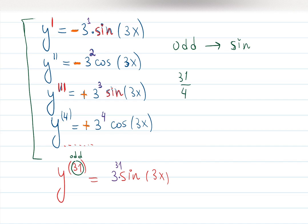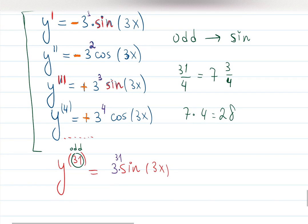So, 31 over 4 becomes what? And that's going to be 7 because 7 times 4 is 28. 31 minus 28 is 3. This is going to be 7 and 3 quarters. The 3 quarters part might be useful or not. Depends how good you are with fractions.